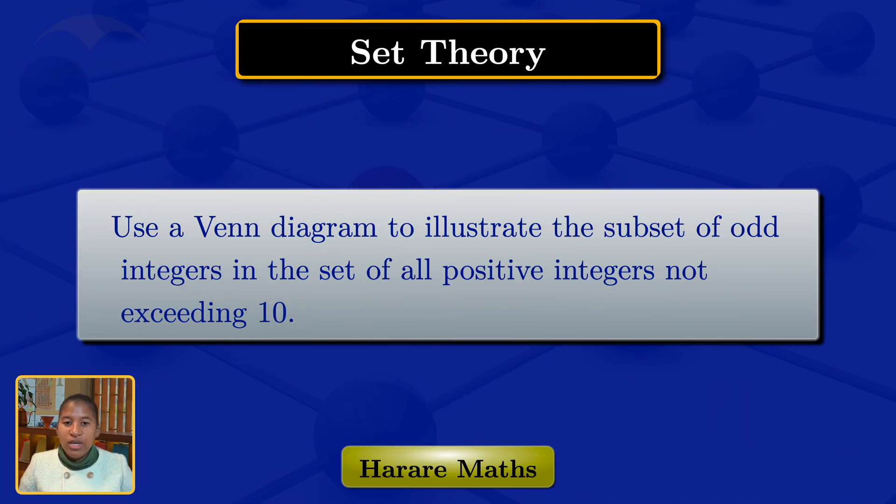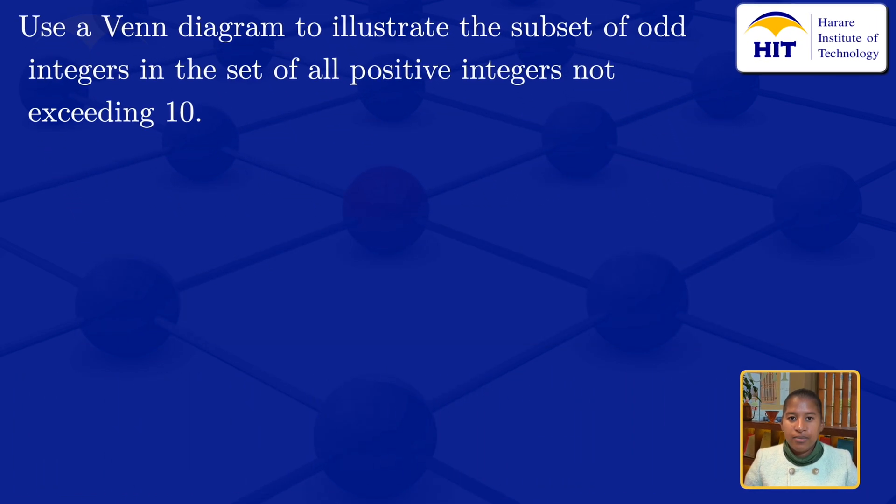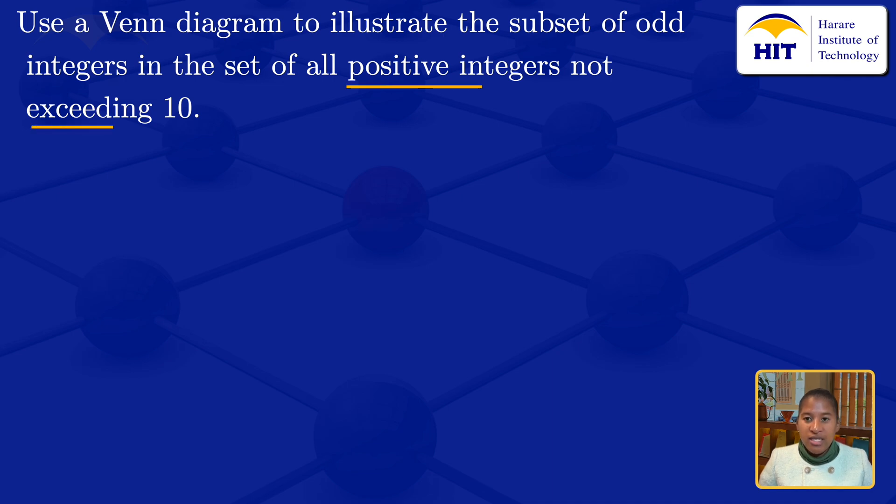I'm going to use a Venn diagram to illustrate the subset of odd integers in the set of all positive integers not exceeding 10. For all positive integers not exceeding 10, I will denote them by P10.